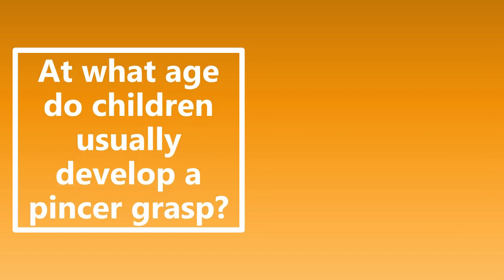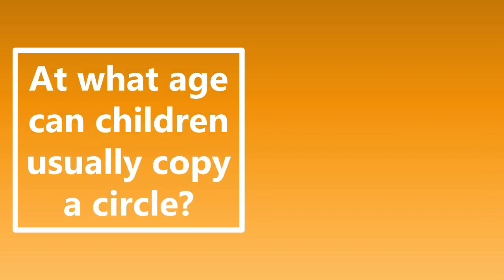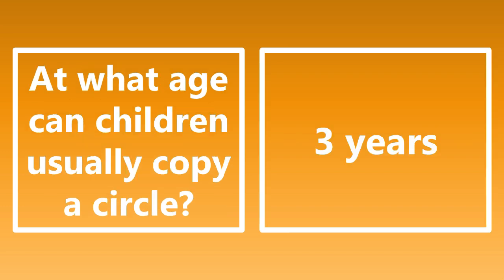At what age do children usually develop a pincer grasp? The pincer grasp — where they use their thumb and index finger to grab small items — usually occurs at around 12 months. At what age can children usually copy a circle? This occurs at about three years. There are many developmental milestones relevant for Step 1 and Step 2, and children can usually draw a circle at about three years old.